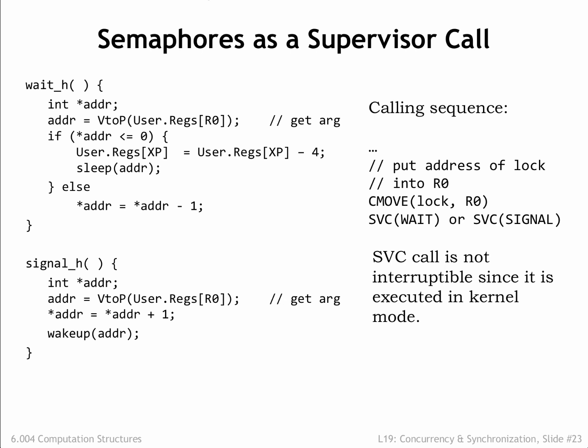Note that the code makes no provision for fairness. In other words, there's no guarantee that a waiting process will eventually succeed in finding the semaphore non-zero. The scheduler has a specific order in which it runs processes, so the next-in-sequence waiting process will always get the semaphore even if there are later-in-sequence processes that have been waiting longer. If fairness is desired, WAIT could maintain a queue of waiting processes and use the queue to determine which process is next in line, independent of scheduling order.